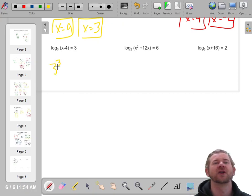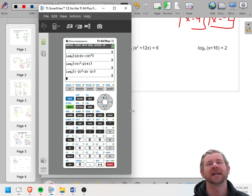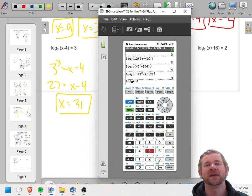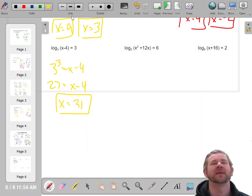All right. 3 to the third is x minus 4. 3 to the third is 27. This one's easier. When you add 4 to both sides, you get 31. And it's such a good practice to just check them. I might as well. Base 3 log of 31 minus 4. Yep. That's 27. 3 to the third is 27, right?